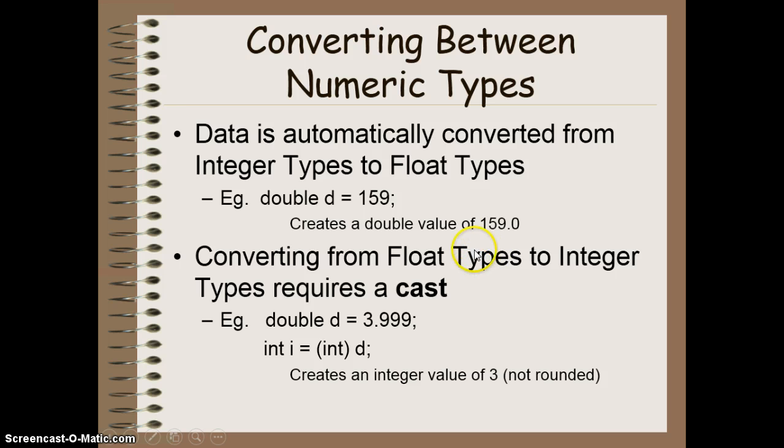Going from float to int is a little bit difficult. We have to cast that. When you cast something, you put the type that you're trying to convert it to in brackets in front of the value you're trying to change. When you do this, you lose precision. You lose the decimal places here. It doesn't round it. It just gets rid of or ignores everything that's after the decimal point. So 3.999 would get cast as a 3, not as a 4.